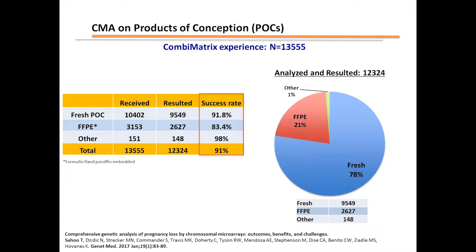The rest of the talk will revolve around data we have captured over the last five years or so. We can probably claim to be one of the largest providers of microarray services for pregnancy loss. The data I'll present today is from a little over 13,000 samples that we have received over a five-year period and successfully analyzed — a little over 12,000 such samples. This data is a significant extension of data that was just published a couple of months ago.